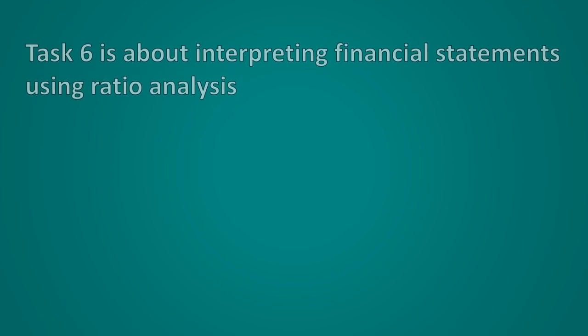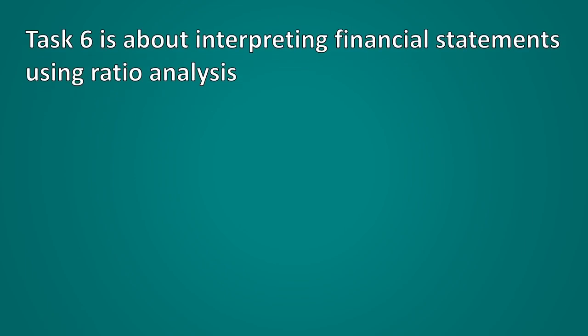Task six is about interpreting financial statements using ratio analysis. You'll be given financial information on a business, usually in the form of financial statements, and from that data you'll be required to calculate various ratios. There is absolutely no reason not to do well on this task as long as you've learned your ratios — flash cards, a poster on your bedroom ceiling, recording yourself reading them out. Whatever it takes, just learn the ratios.